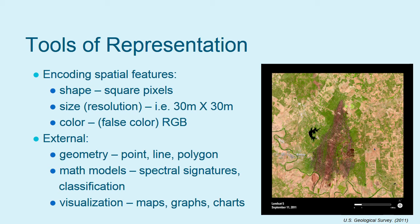The next element of spatial thinking is tools of representation. Landsat data is represented in an array of pixels containing reflectance values. Special image analysis software is used to view Landsat data. Composite images can be made to enhance the representation of features. In this Landsat image, the lake is represented with dark blue pixels, vegetation is green, soil is tan, and the burn scar is a dark brown. Combining different tools and techniques can produce spectacular imagery to represent a space or event.